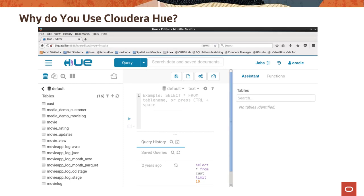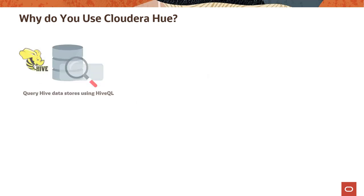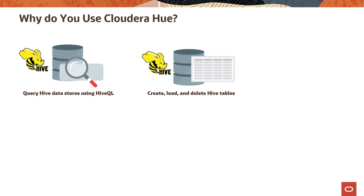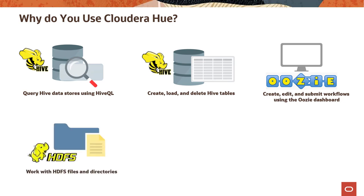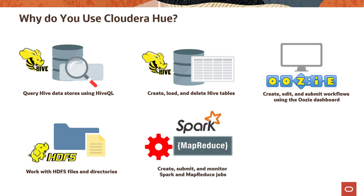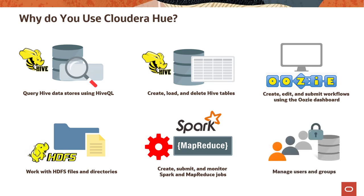You can use Hue to perform any of the following tasks: query Hive data stores using SQL-like queries called HiveQL, which are implicitly converted into MapReduce or Spark jobs; create, load, and delete Hive tables; create, edit, and submit workflows using the Oozie dashboard; work with HDFS files and directories; create, submit, and monitor Spark and MapReduce jobs; and manage users and groups.